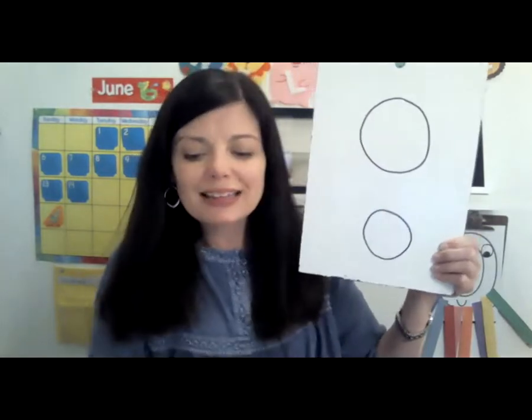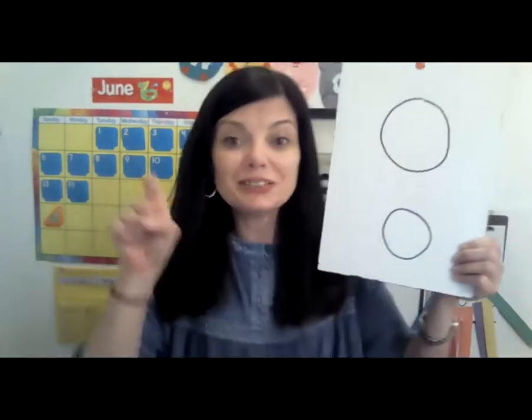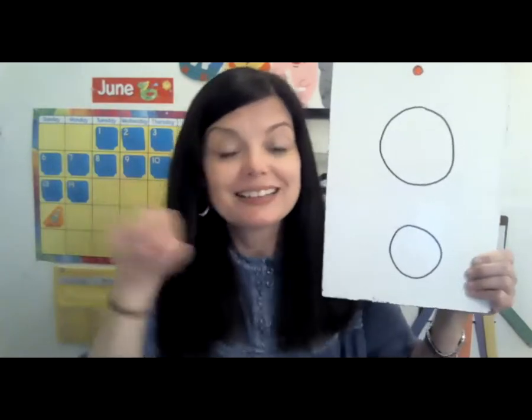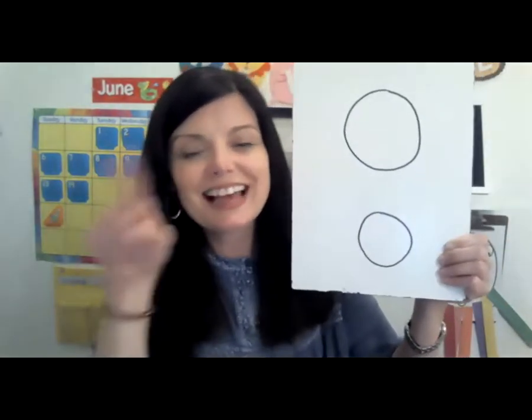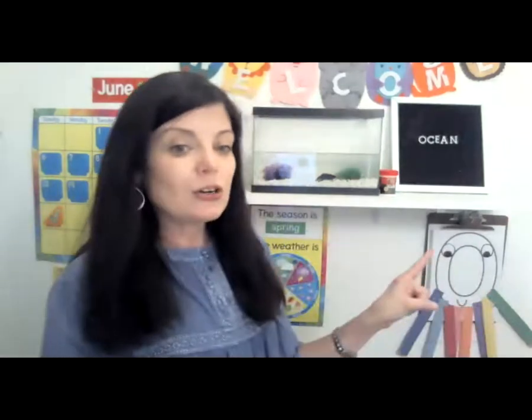Do you want to try to sky write the letter O? Curve around and back. You can do it really fast if you want to — whoa, that's a fast letter O! That's a pretty quick writing assignment right there. Good job. So this is the uppercase and lowercase O. Now we know what letter O looks like.